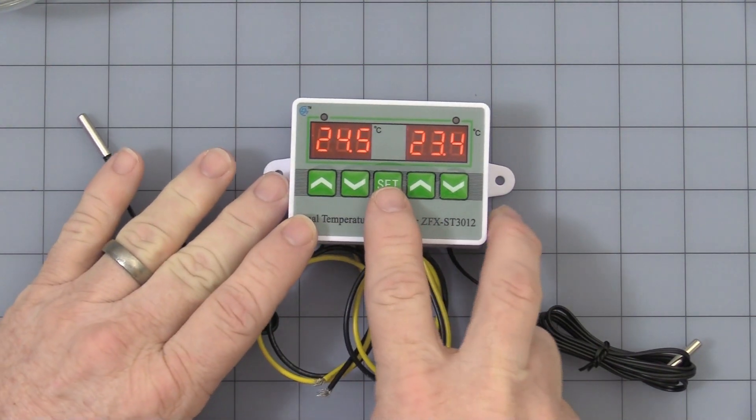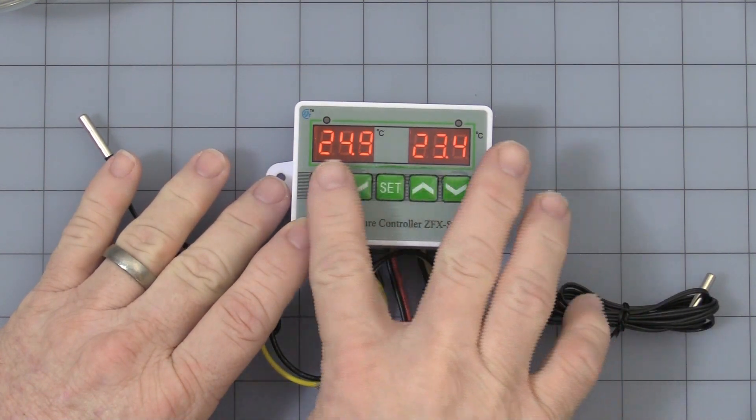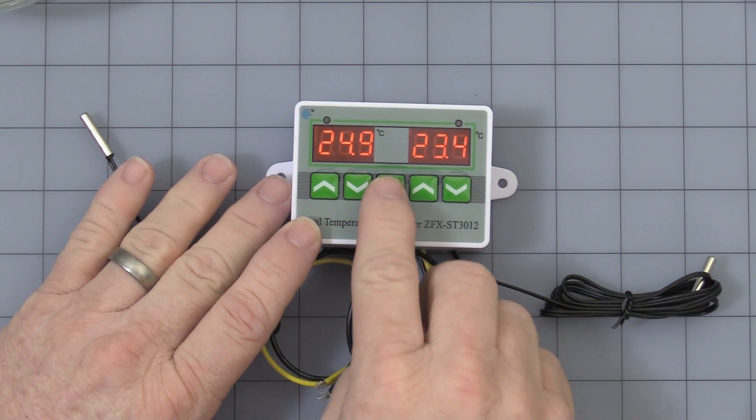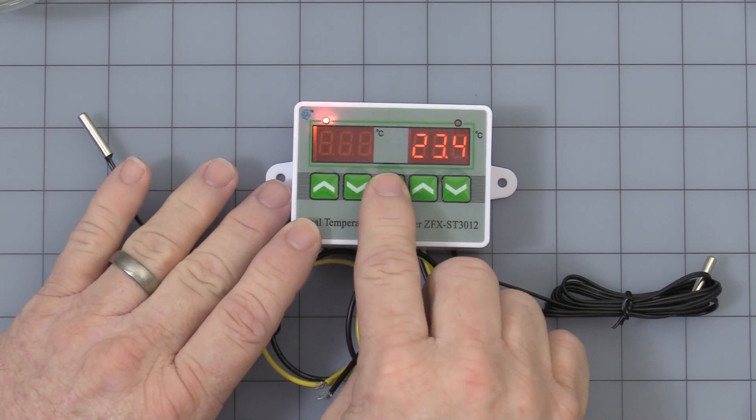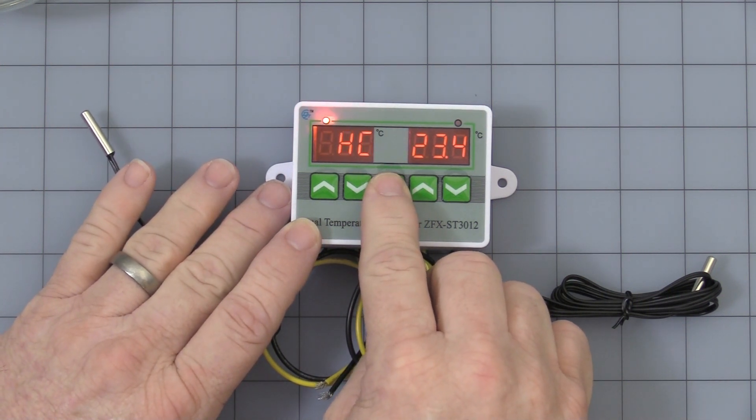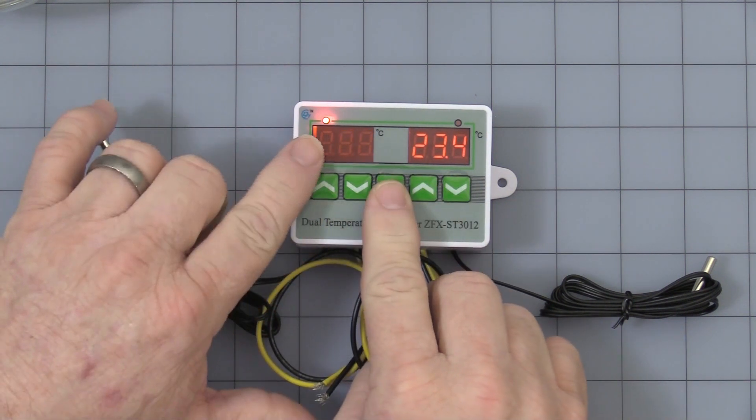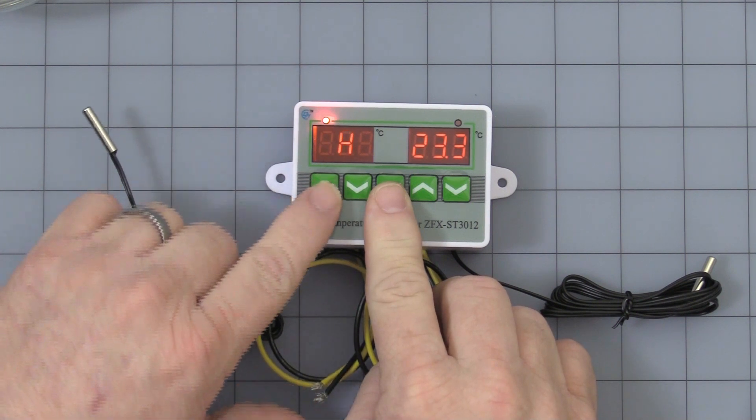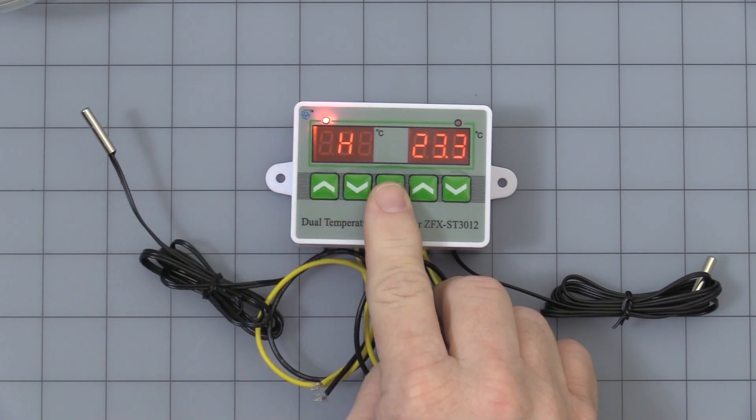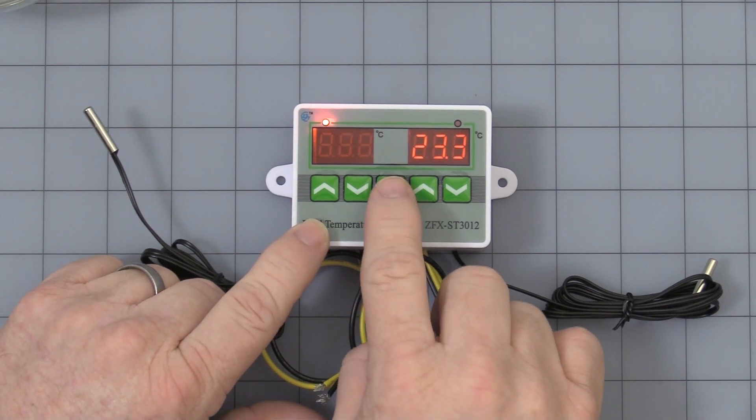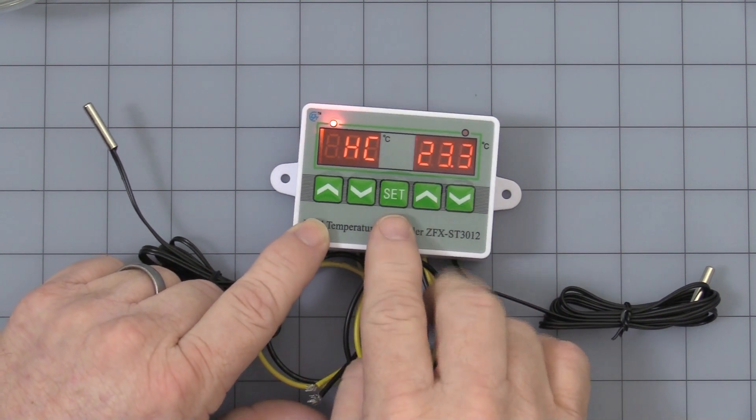Now to get into programming, programming is the same for both sides. It depends on what side is flashing is which side you're going to program. So let's start with press the set, then press and hold set again. Now you get an HC. Press the set again. This is factory set at C for cooling mode or heating mode. Let's stay in the cooling mode. I think that's what most people will use.